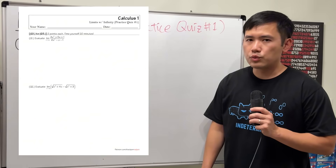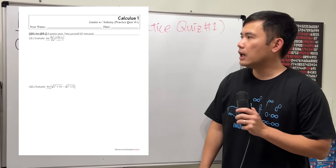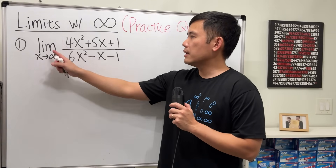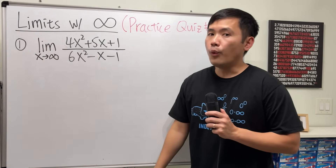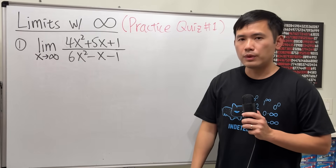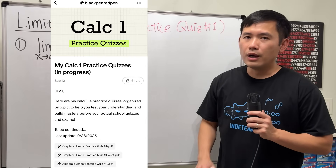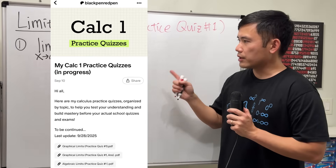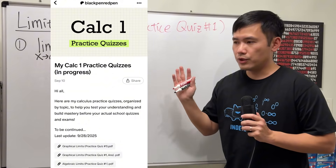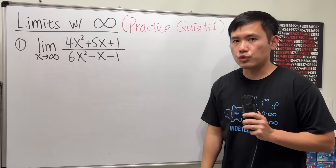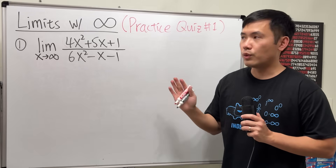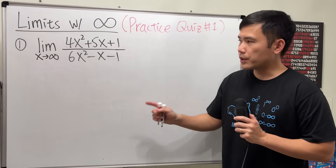Here's the solution to my Calculus 1 practice quiz on limits with infinity. Either we will have a limit as x going to infinity, or the expression turns out to be infinity — we will have to figure that out. Make sure you go download the file from my Patreon; there are other quizzes as well. The link is in the description. Time yourself 20 minutes — we have 5 questions. Here we go.